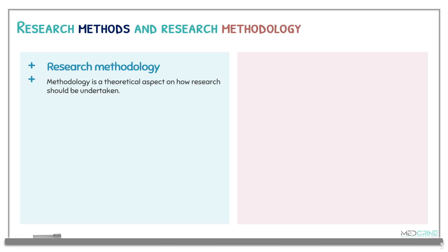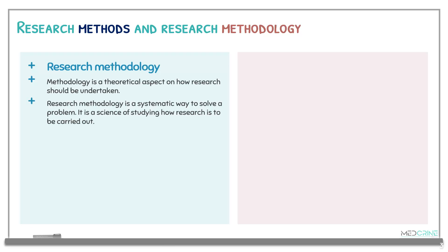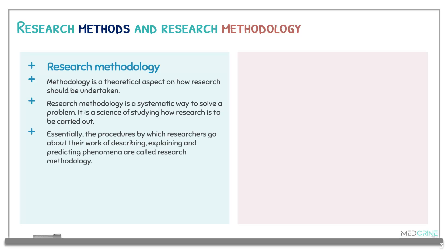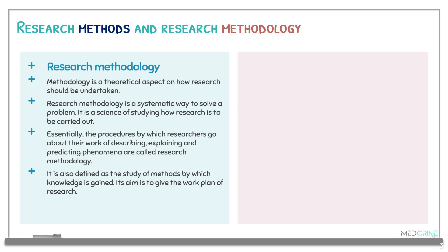Research methodology, by definition, is a theoretical aspect on how research should be undertaken or carried out. It is a systematic way of solving a problem — a science of studying how research is to be carried out. Essentially, the procedures by which researchers go about describing, explaining, and predicting a phenomenon are what we call research methodology. We can also define research methodology as a study of methods by which knowledge is gained, and its aim is to give the work plan of research.